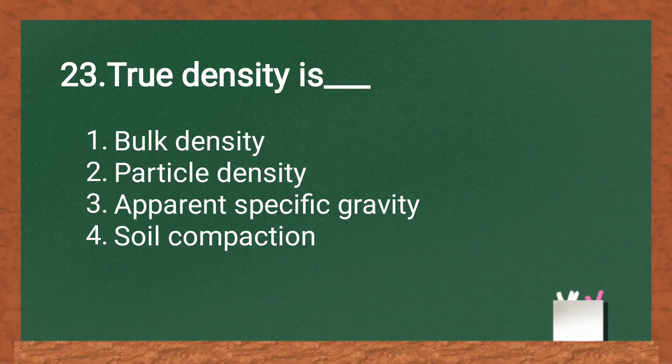Two densities: bulk density, particle density, apparent specific gravity, or soil compaction. Particle density is true density. True density is absolute density. Particle density is the correct answer.